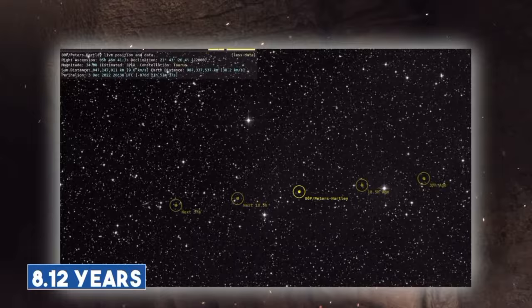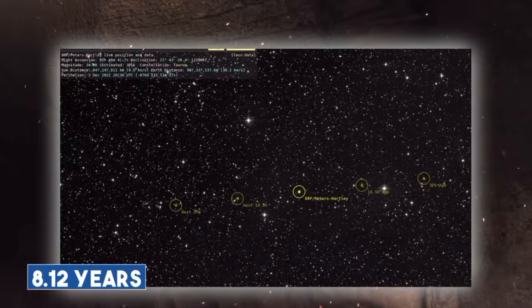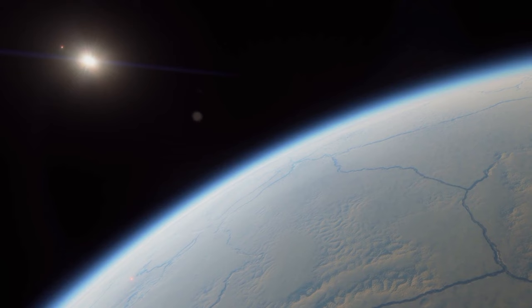Comet ADP Peters-Hartley is a comet that orbits the sun every 8-12 years. It was first discovered by Christian Heinrich Friedrich Peters in Naples, Italy. But because there wasn't enough information to track its path accurately, the comet disappeared for over 100 years.